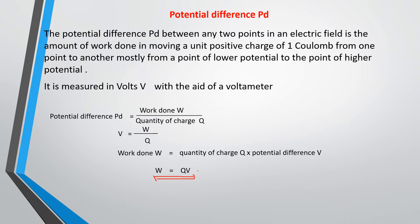So far I've given you about three equations in this class: current I equals Q over T; voltage V equals current times resistance; and work done equals quantity of charge times voltage, or equivalently voltage equals work done over quantity of charge. As time goes on we are going to see how all these equations are interrelated.